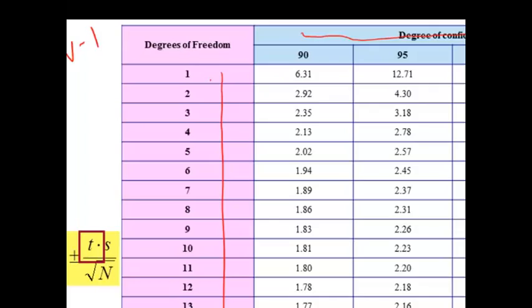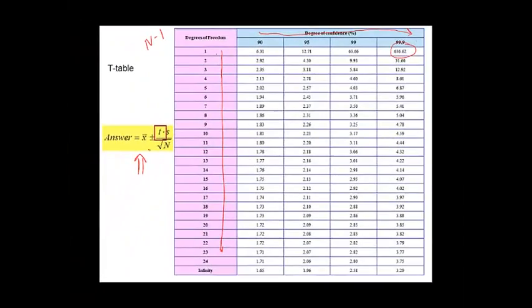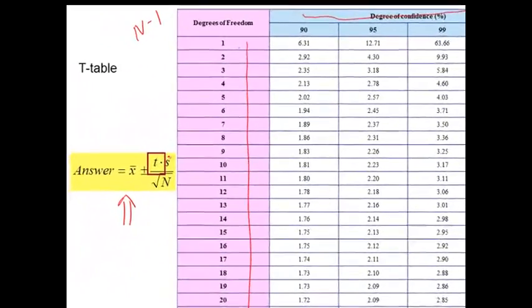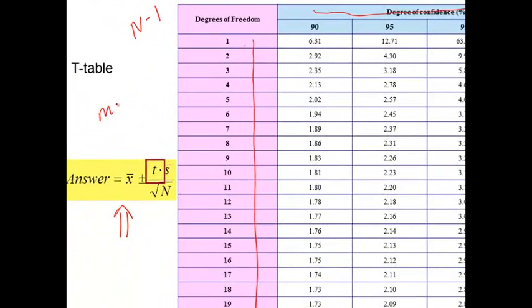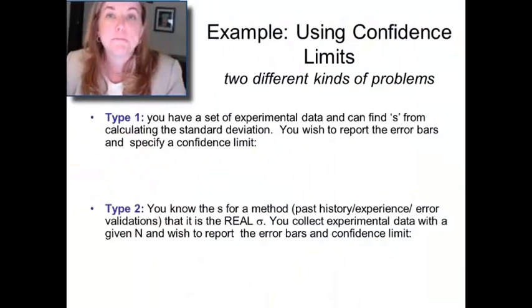This formula is an important one: you're going to modify your standard deviation by the t-value and n. The only thing that can be confusing for students is that on the bottom you're going to have the number of measurements n, but when you look up the t-table, remember you're looking up n minus 1. Degrees of freedom are not the same as the number of measurements.